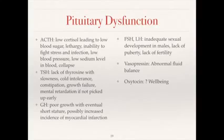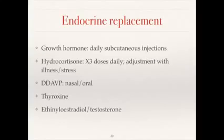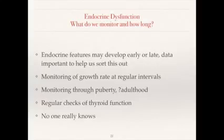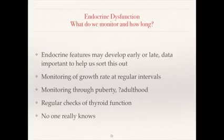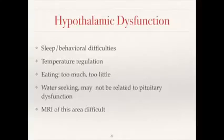Diabetes insipidus, a lack of vasopressin, can occur in 5% and causes abnormal fluid balance. The good news is if we detect abnormal pituitary function, there are hormones available to be administered, done in conjunction with a pediatrician and pediatric endocrinologist. These endocrine features may develop early or late. There should be monitoring of growth at regular intervals, monitoring through puberty and maybe even into adulthood, and regular checks of thyroid function.